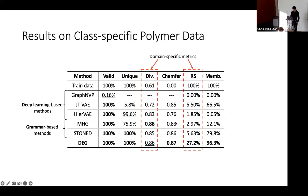First, some qualitative results. The learned grammar on the left and the molecules generated using it on the right. Interestingly, some learned production rules directly correspond to characteristic functional groups of the input dataset — for example, the functional group for isocyanate and the one for acrylate, two of our three datasets. The grammar is explainable: it captures interpretable chemical knowledge corresponding to functional groups that determine molecule types.